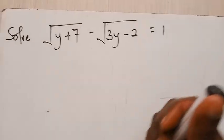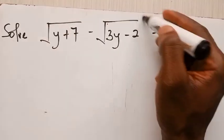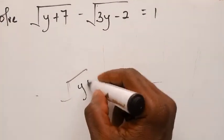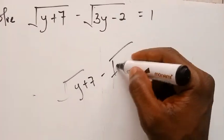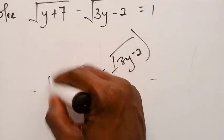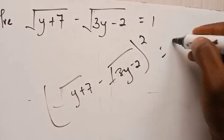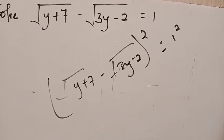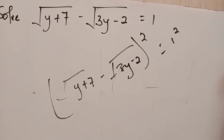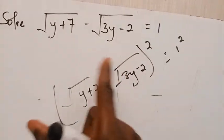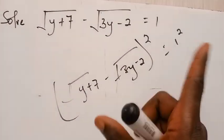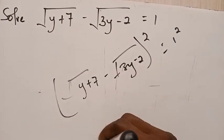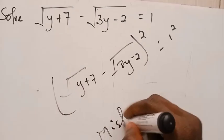The first mistake you see students doing is they normally square everything here and then square down here — going like this with root of (y+7) squared minus root of (3y minus 2) squared — which is obviously not the right step to take. This is a mistake by going this way.